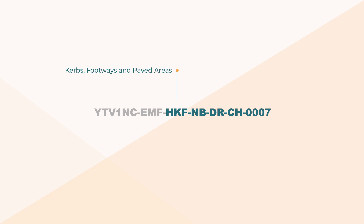Using the same example as before — the kerbing series drawing 7 — its name under this naming convention should be something like HKBNBDRCH0007, meaning it's a highway, kerbing, footways and paved areas drawing, northbound, a drawing by civil highways, the number 7 in the series.